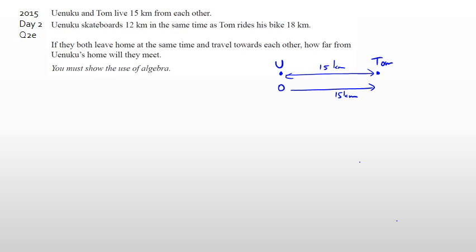Your first equation: if you take Yu plus T — T is Tom's distance from Yu's house — that equals 15 kilometers. No matter which direction Tom lives, it's always going to be 15 kilometers. So the distance from Yu's house plus the distance from Tom's house always equals 15 kilometers.